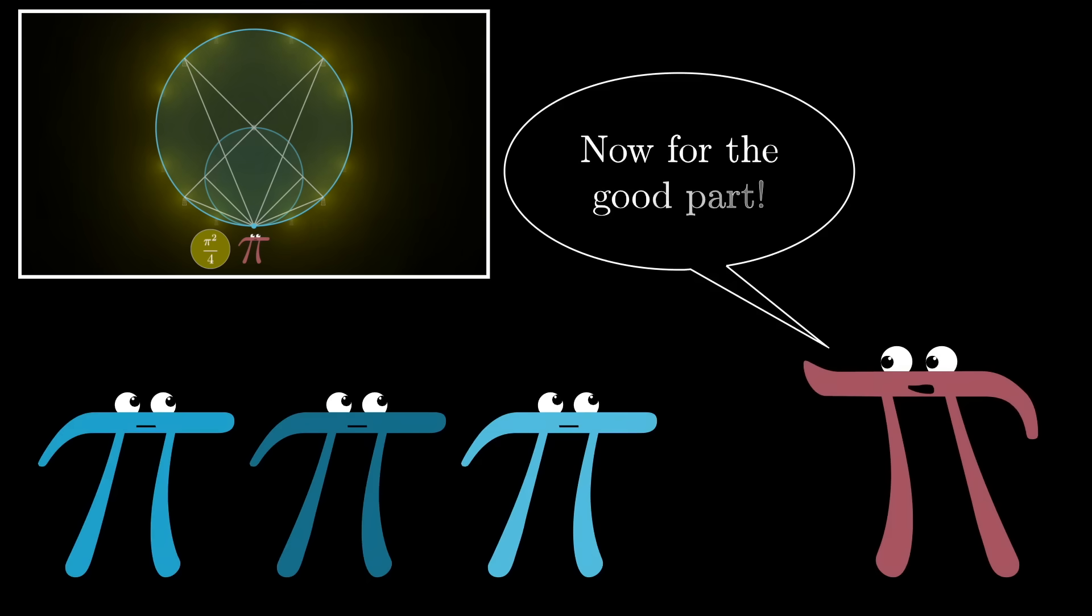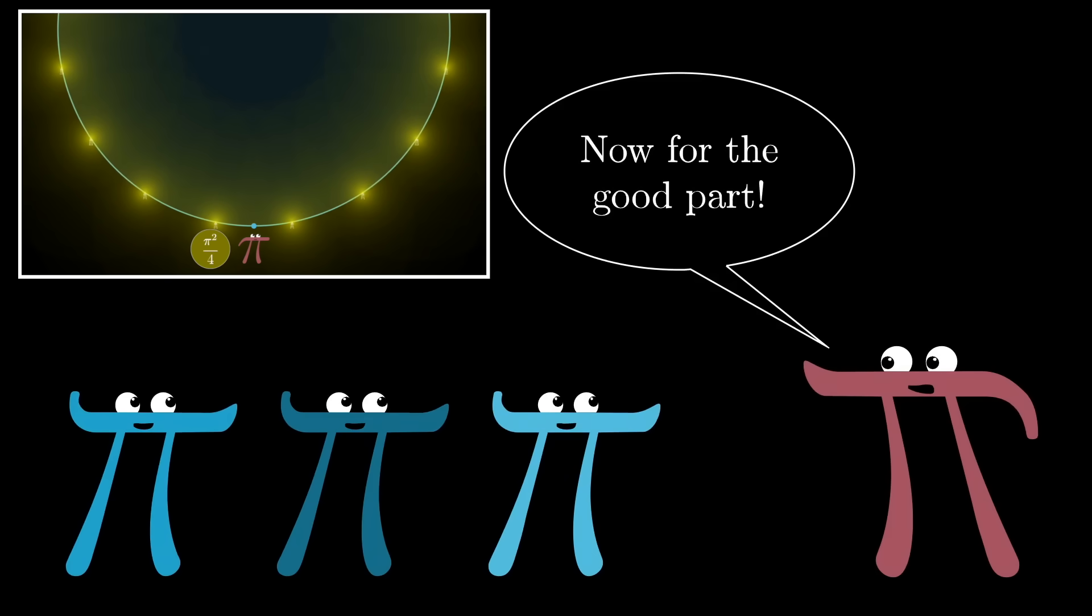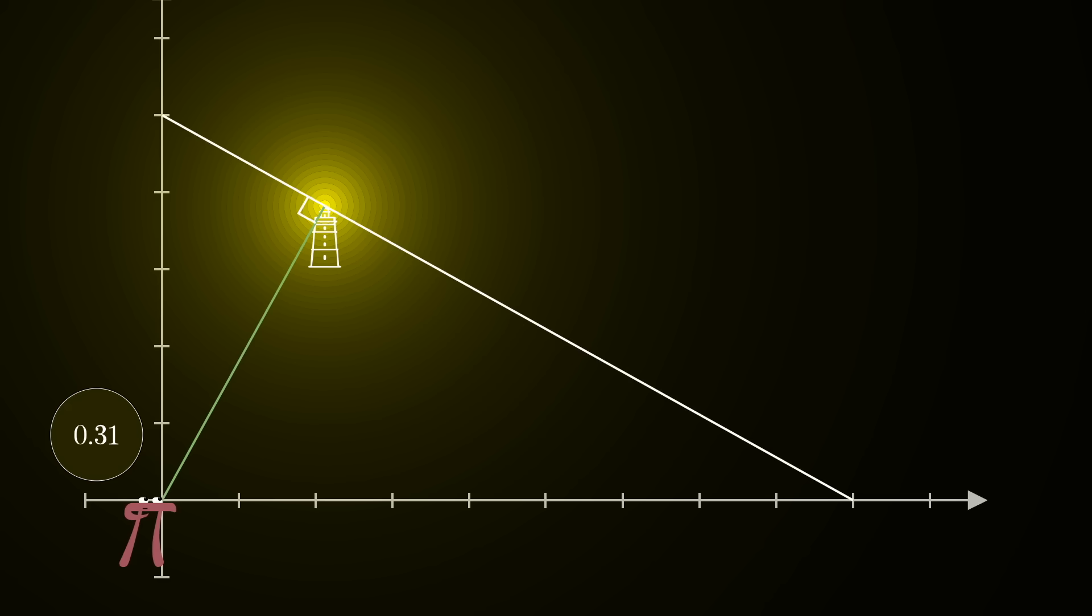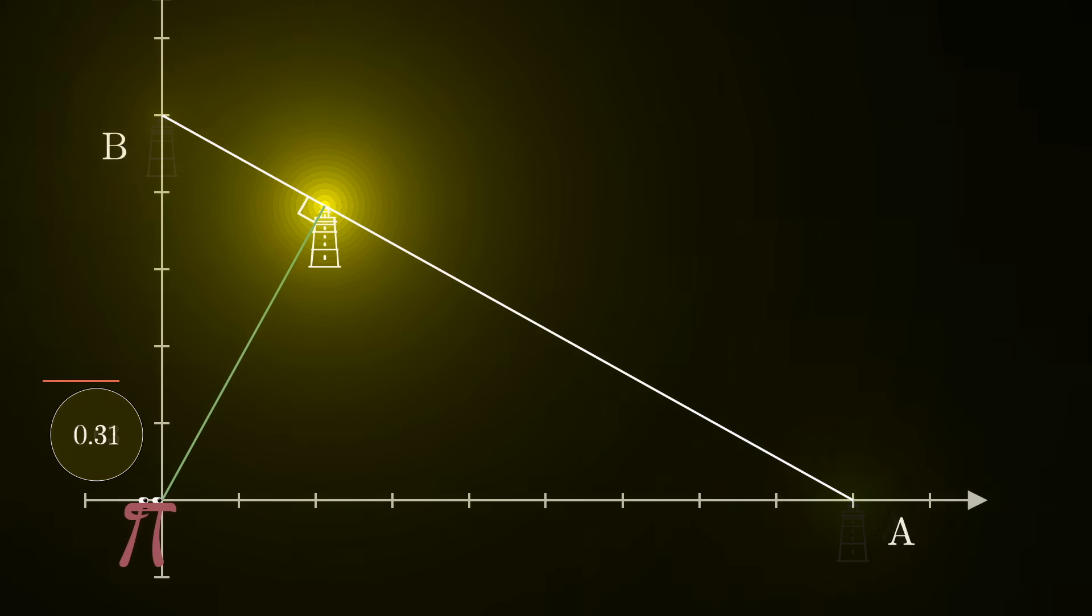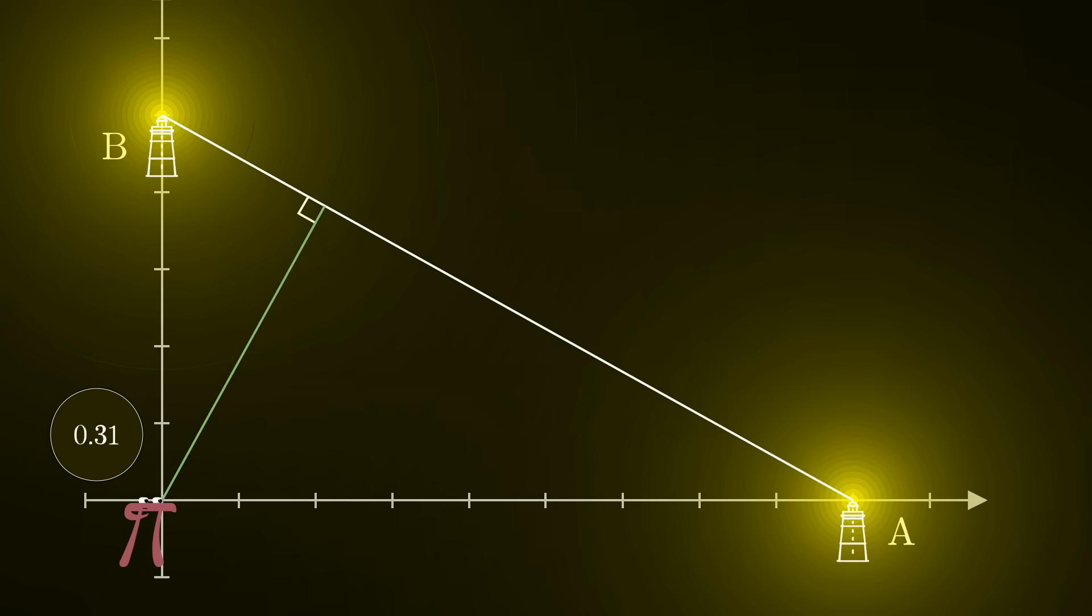All right, buckle up now because here's where things get good. We've got this inverse Pythagorean theorem right, and that's going to let us transform a single lighthouse into two others without changing the brightness experienced by the observer. With that in hand and no small amount of cleverness, we can use this to build up the infinite array that we need.